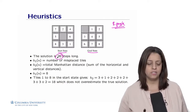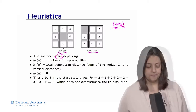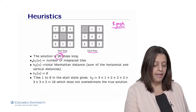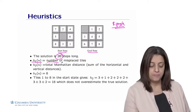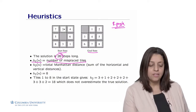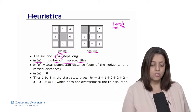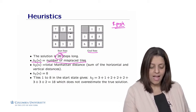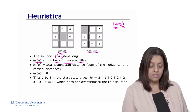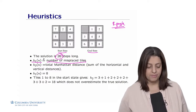One possible heuristic is h1(n), the number of misplaced tiles — counting how many tiles are not in their correct position compared to the goal state. Looking at the start state, none of the tiles are in their final position, so h1(n) equals 8, representing the number of misplaced tiles.